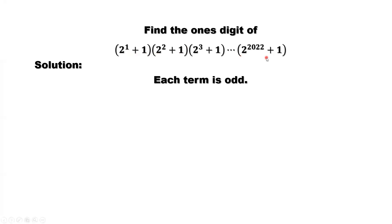The product of all odd numbers. So the ending digit, the one's digit, should be odd. Odd times odd is odd. So the one's digit should be an odd number. Now what are those possibilities for one's digit? We have 1, 3, 5, 7, 9.